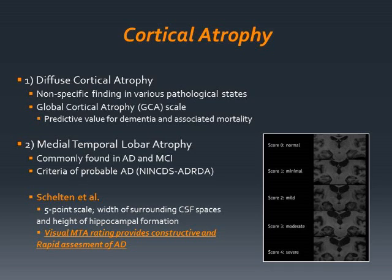Changes of the medial temporal lobes are important because they are commonly found in association with different stages of Alzheimer's disease and mild cognitive impairment, but less commonly related to normal aging, and are even incorporated into the criteria for probable Alzheimer's disease. Medial temporal lobe atrophy was first quantified by Stelzen et al. using a five-point subjective scale, evaluating the width of the surrounding CSF spaces and the height of the hippocampal formation. It showed good correlation between scale values and linear measurements, suggesting that visual medial temporal lobe atrophy ratings might provide constructive and rapid assessment for diagnosing or excluding Alzheimer's disease in clinical practice.